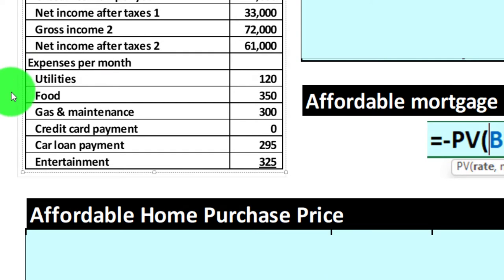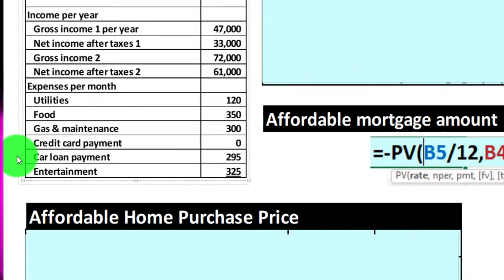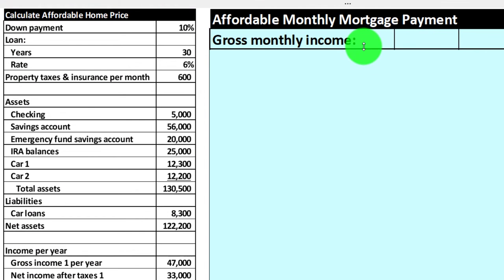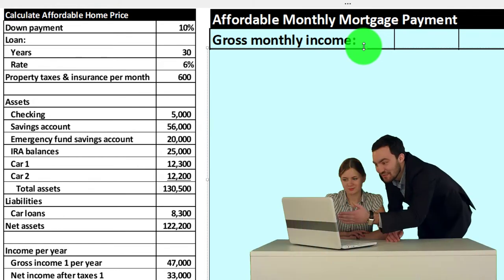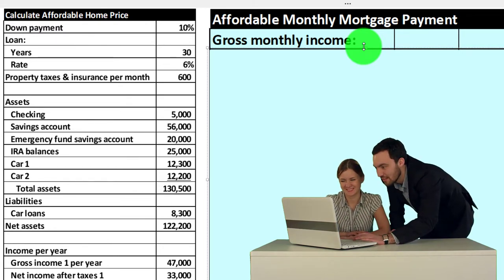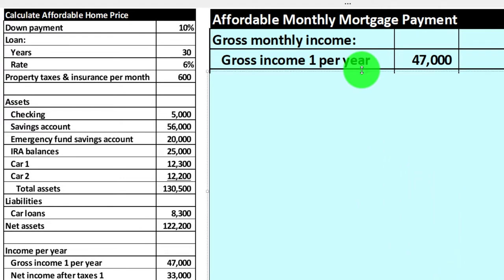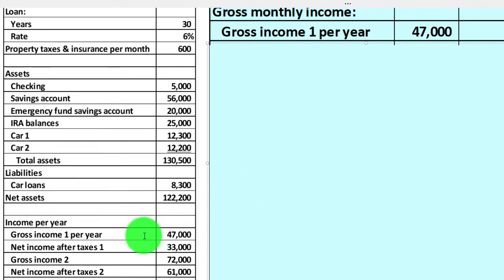We've got expenses per month: utilities, food, gas, credit card, loan payment, and entertainment. Now let's think about calculating from the bank's perspective. The bank's heuristics may change from period to period, so you want to talk to your financial institution about the current heuristics and what loan calculations they're using. They typically base income on gross income because they can verify that number. But remember, you also want to do your own budgeting using a full budget including your expenses.